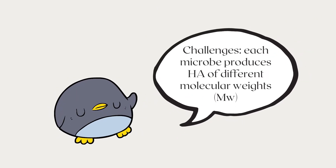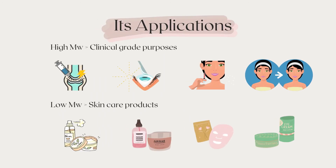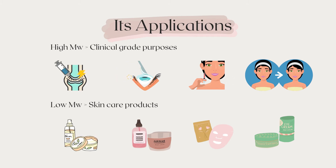Although this idea sounds promising, there are still a lot of challenges that have to be taken into account. Using different types of microbes will lead to varying sizes of hyaluronic acid molecular weight. Molecular weight defines the property of the hyaluronic acid. Hyaluronic acid with higher molecular weight is known to be clinical grade, meaning it is commonly used in orthopedics to treat arthritis, or even for eye surgery, dermal fillers, or even plastic surgery. Low molecular weight hyaluronic acid is usually included in skin care products.